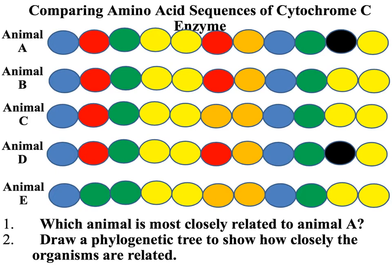One common enzyme that scientists have looked at in great detail is called cytochrome C. Cytochrome C is an enzyme found in the mitochondria. It's needed for respiration, and as all organisms carry out respiration, cytochrome C is present in all organisms. However, there are slight differences between the cytochrome C of different organisms. And in the same way as we saw for DNA, if we compare the differences, we find that the more the differences between the sequences of cytochrome C, the less related the organisms are.